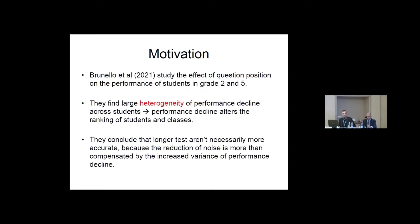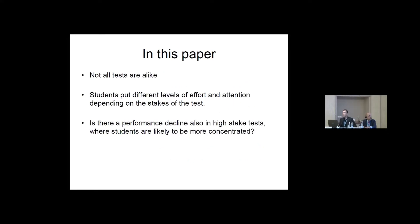This is not the end of the story. We have a paper — the one we presented three years ago, now published in the Oxford Bulletin of Economics and Statistics — that shows there is this performance decline using INVALSI test scores in grade two and five, but also, and this was not previously noticed, there is large heterogeneity in this performance decline across students. This has additional implications for test reliability, because a longer test reduces noise but increases variance from performance decline, so it's not obvious that a longer test is more reliable.